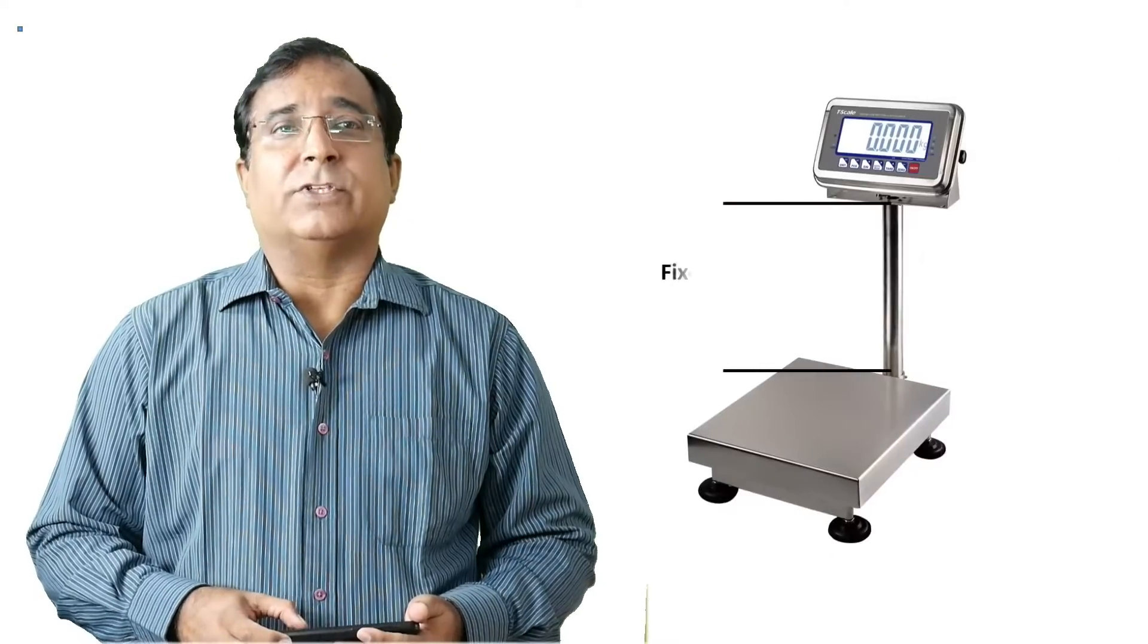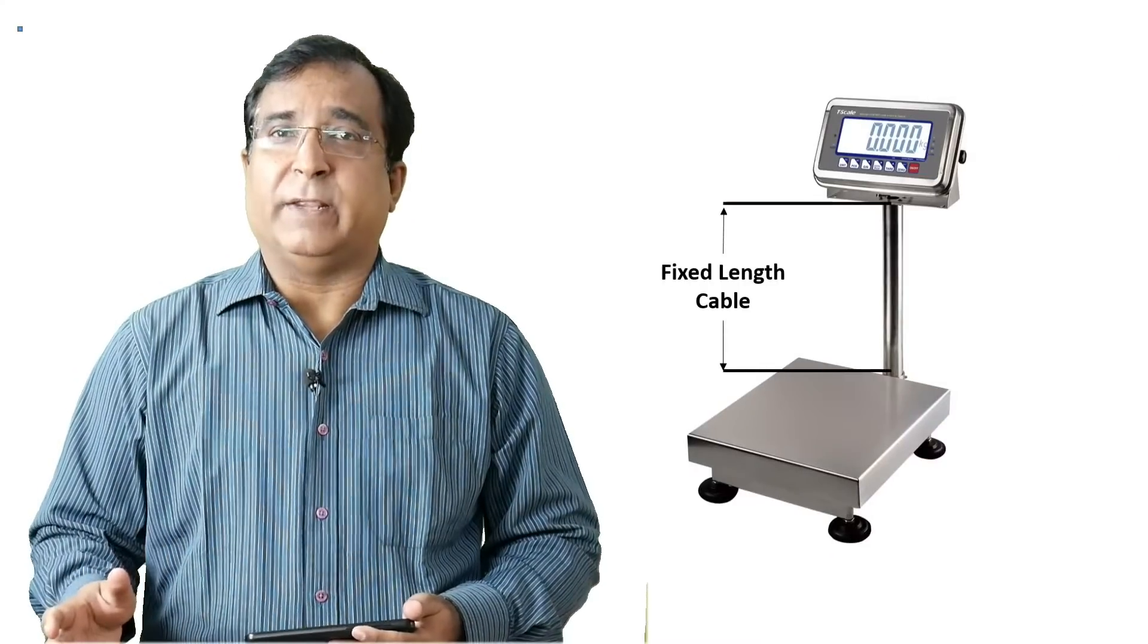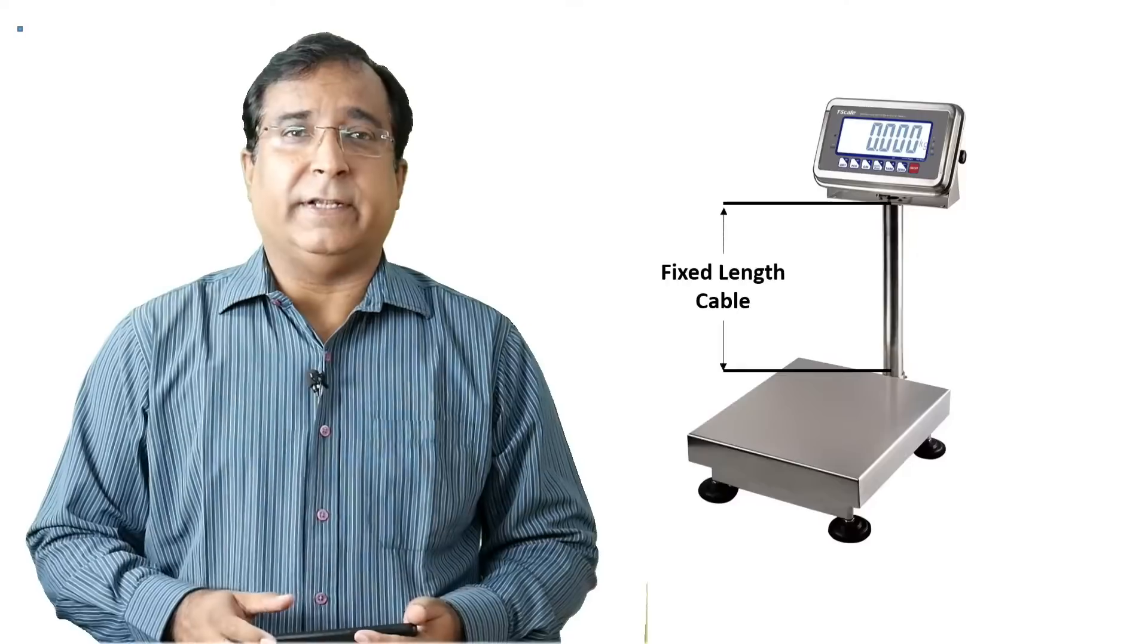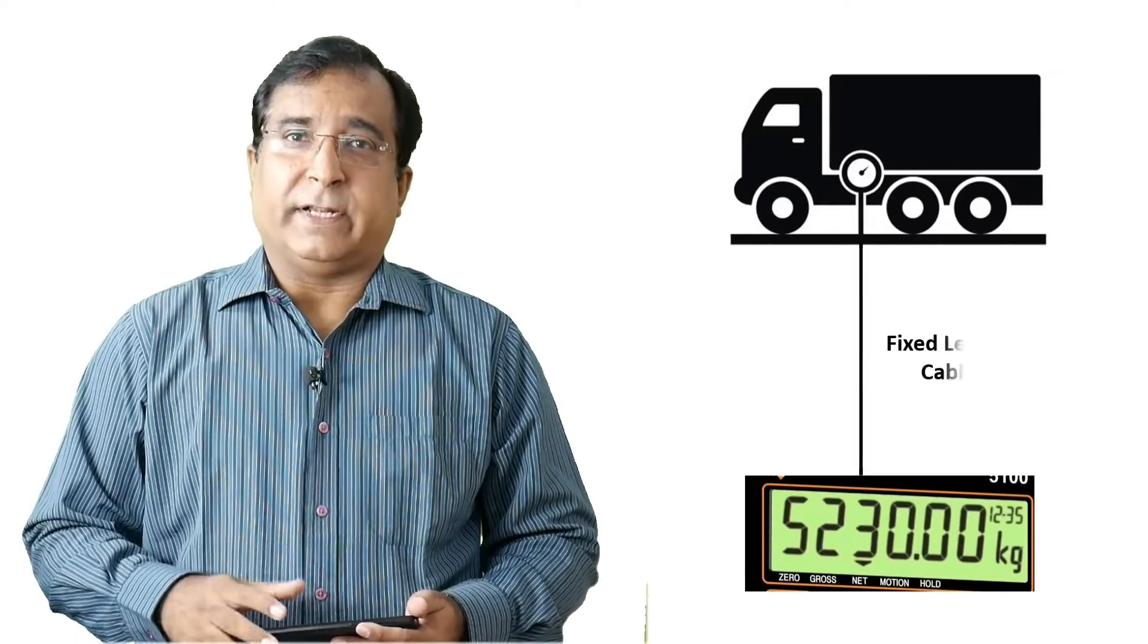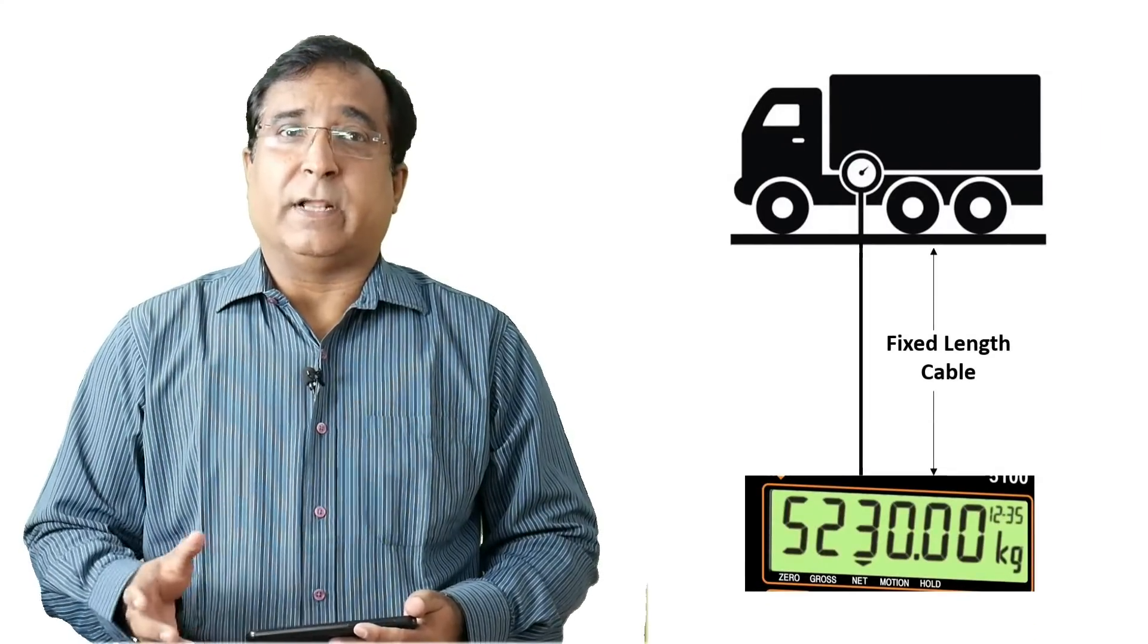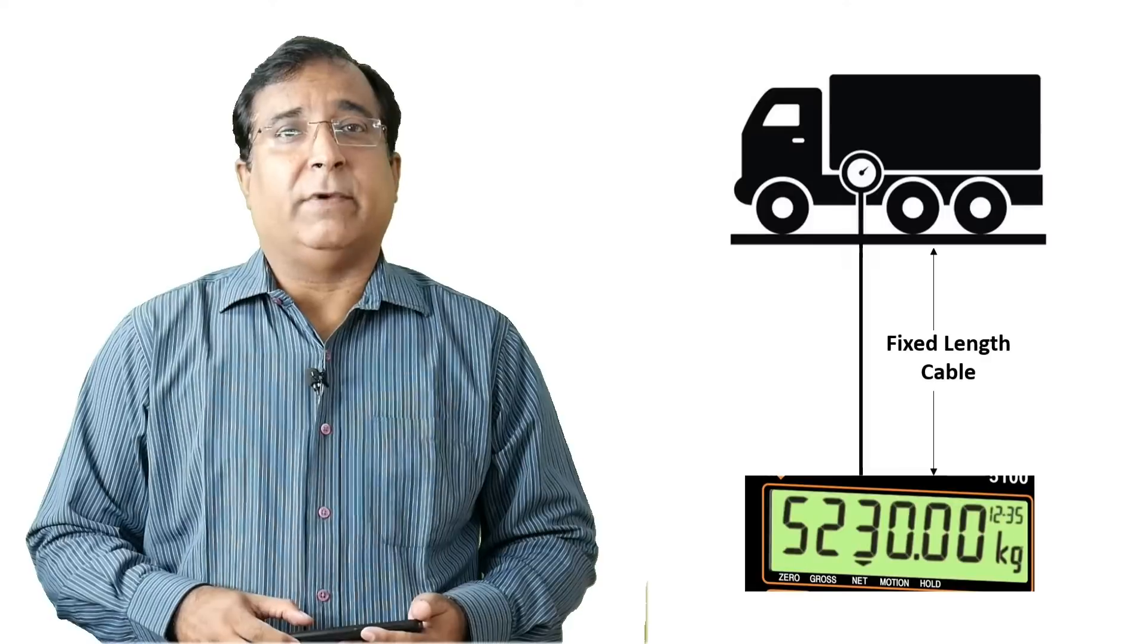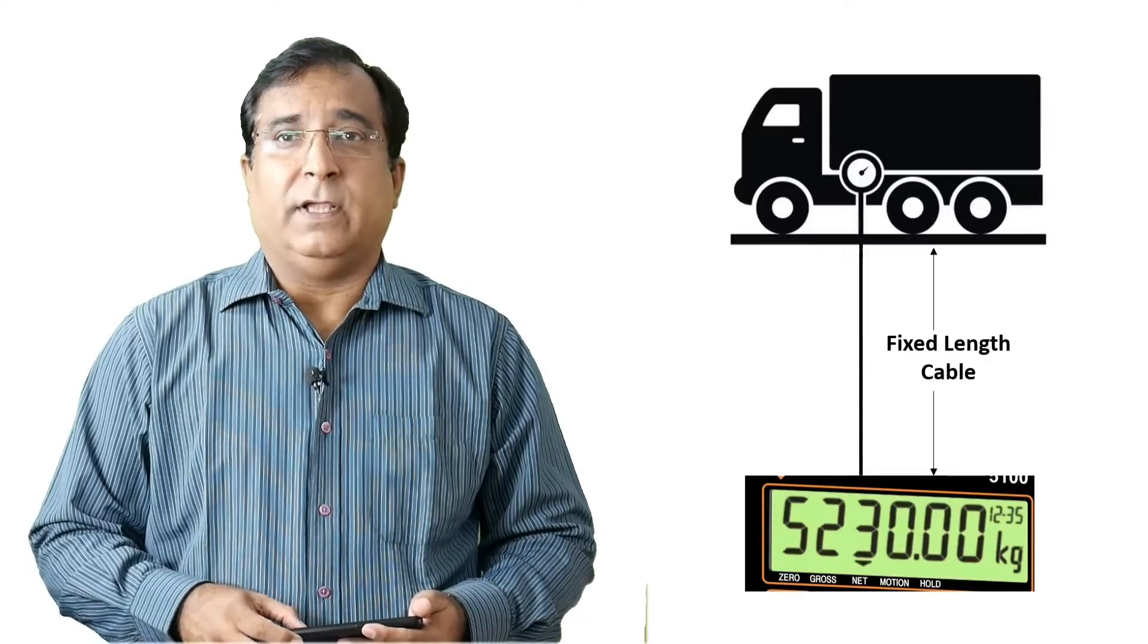4 wire load cells are mostly used for local weighing machines or for static weighments where the weighing platform is located near the indicator. This also reduces the cost of a load cell. And these weighing scales are factory calibrated and hence it is recommended that you never cut the cable of 4 wire load cell as they are factory calibrated for a fixed length. There is no cable length compensation in this type of weighing scales.